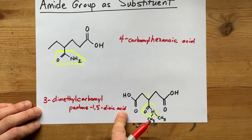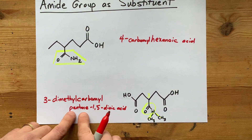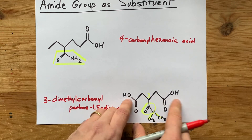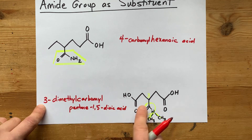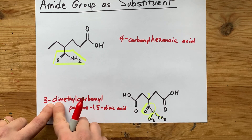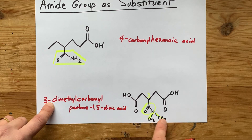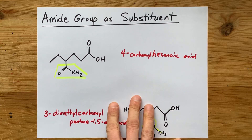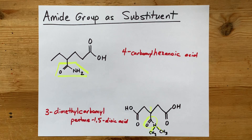This should all be on one line, but I obviously ran out of room. Pentanedioic acid is the five-carbon chain with the two COOH groups, and then on carbon three we have a carbamoyl group that has been substituted twice with methyl groups. Thanks for being with me, and I hope that cleared things up. Best of luck.